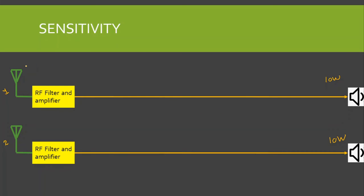For Receiver 1, the minimum signal strength it can detect and amplify is 1 Watt. Signals below 1 Watt cannot be detected. Using an amplifier with gain of 10, a 1 Watt signal becomes 10 Watts — sufficient to drive the loudspeaker. However, if only a 0.5 Watt signal is received, then 0.5 multiplied by 10 gives only 5 Watts, which is not enough to drive the loudspeaker.